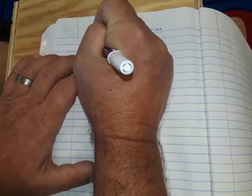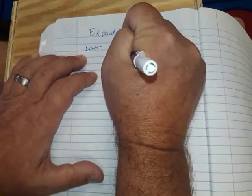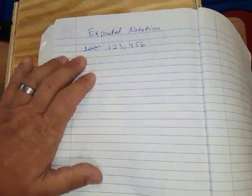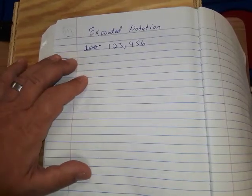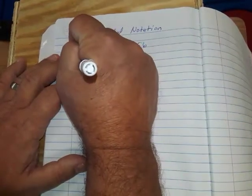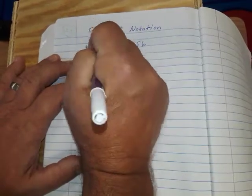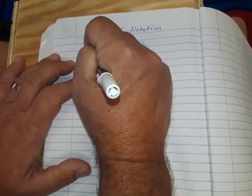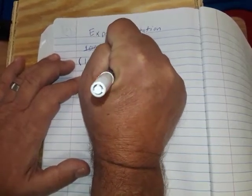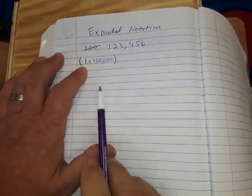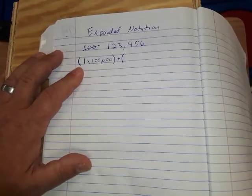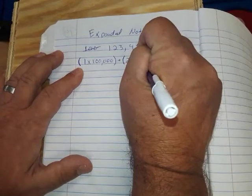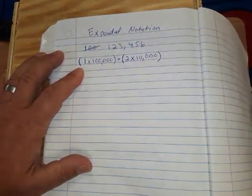I'm going to start with 123,456 — all my numbers ascending from one to six. The first thing is we're taking the digit, so I'll draw some parentheses. The digit is 1 and we're going to multiply by its place value, which is the hundred thousands place — so it's 1 times 100,000. Then we add it to the next digit, which is 2, and multiply by its place value, the ten thousands place: times 10,000.